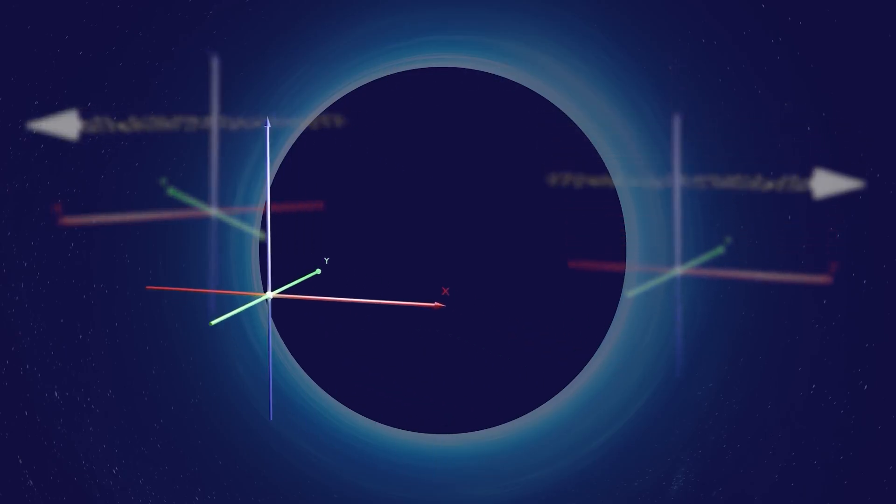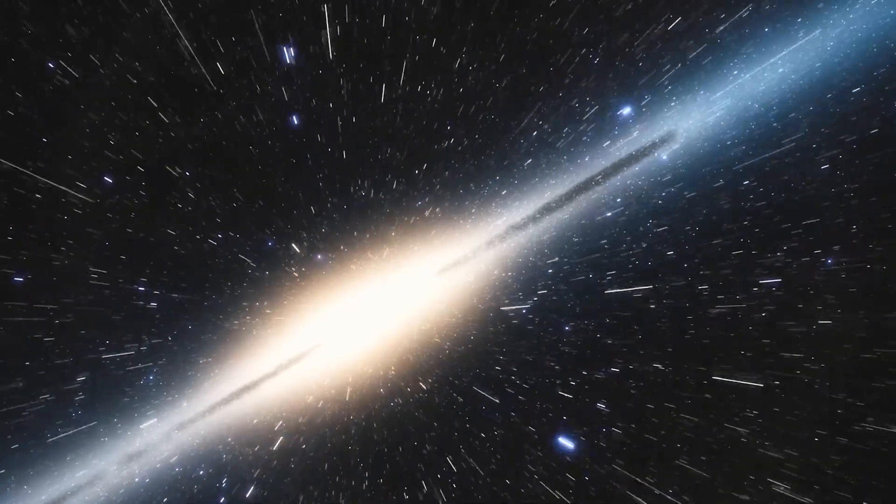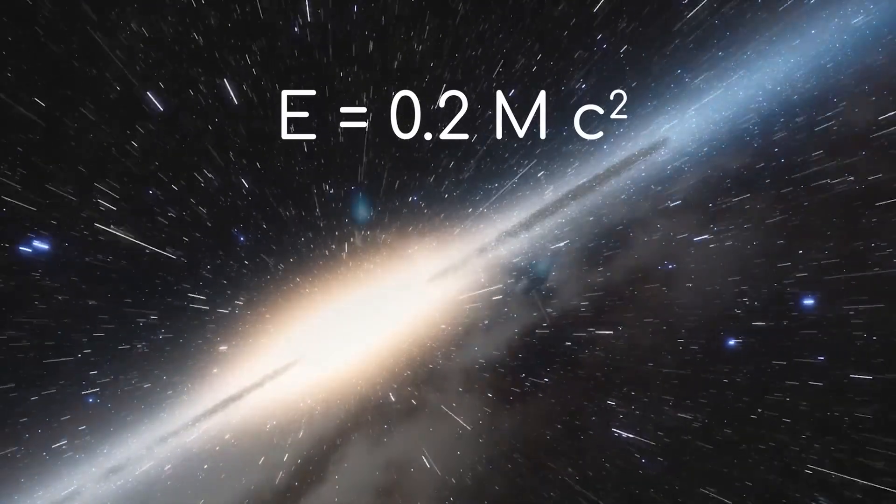but a region where space is bent to an extreme, a place where time and space swap their roles. Michell and Laplace were right, but only halfway. They spoke of a dark star where light was trapped. Einstein and Schwarzschild told us why: not because light is pulled, but because there is no outward direction left to go.